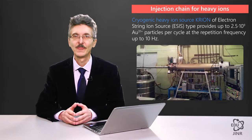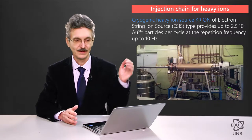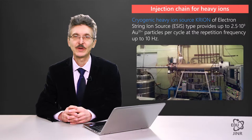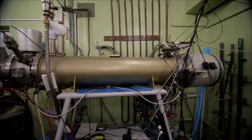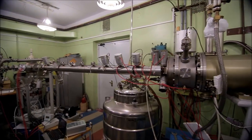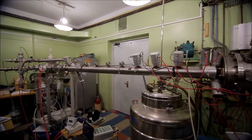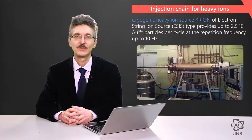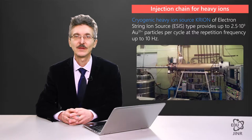The heavy ion injection chain of the Nucleotron begins with a source of heavy ions. This picture shows that source on the test bench. This is a source of an electron string type based on a superconducting solenoid with a very high field homogeneity, inside which an electron beam propagates and produces the ionization of residual gases. The residual gas ions required for acceleration in the accelerator complex are used. These types of sources were developed by our institute, and our laboratory has considerable experience working with such sources.